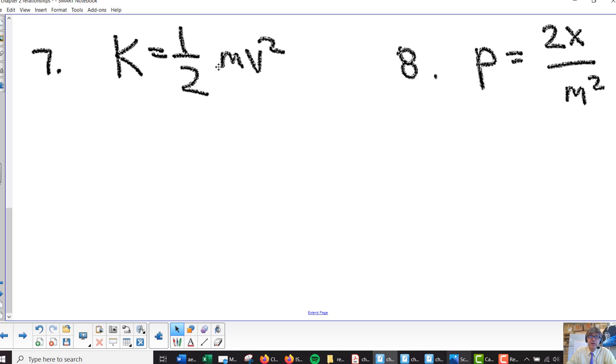Solving this for M, this one's a little easier. The square is only on the V there, so maybe multiply both sides by 2 to get rid of the half, then divide by V squared, and you're done. This one's a little harder because it's on the bottom and you're going to have to take the square root at the end as the last step.